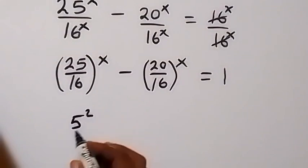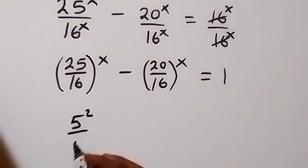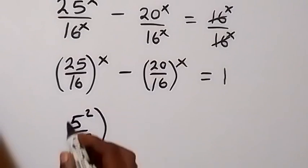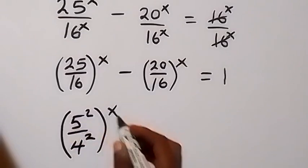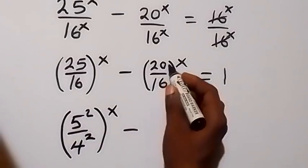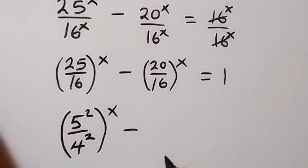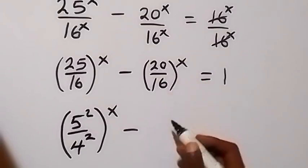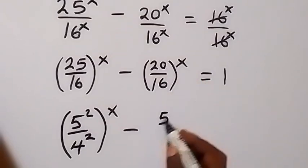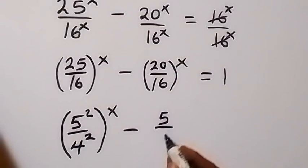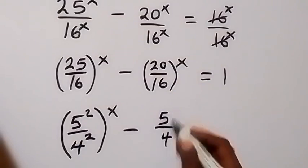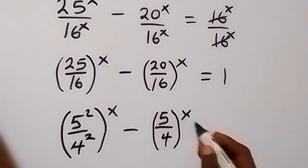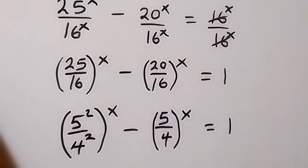In the next step we can express 25 as 5 squared and 16 as 4 squared, all raised to power x. Then for the middle term, 4 can go into 20 giving 5, and 4 can go into 16 giving 4. So we have 5 over 4 raised to power x, which is equal to 1.